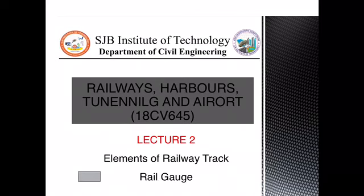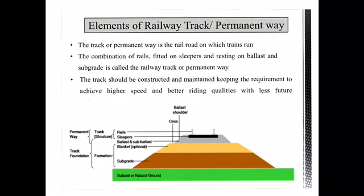Hello students. In this session we will be discussing the various elements of the railway track. We will also be covering what is a railway gauge, the various requirements of providing the railway gauge, and the classification of the railway gauge. First, let us look into the permanent way — what is a permanent way and what are the elements of the permanent way.